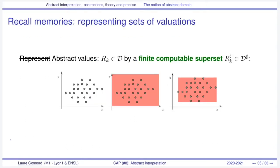Let's just recall a bit from the last episode. We were representing abstract values in a concrete domain by a finite computable superset called an abstract value. If we depict the abstract single values of the couple x and y, we have seen that we can represent the red shape as a cross product of signs, or use the shape of intervals to represent all the values possible inside this red box. The object of this section is to define properly what is an abstract domain and what is a legal abstract domain.